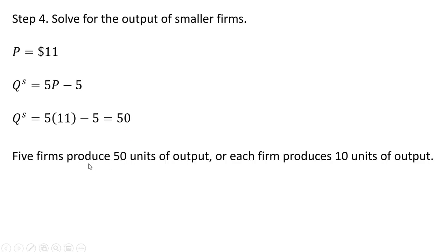So we have five firms producing 50 units of output, or each of the smaller firms producing 10 units of output. Note that the price is $11 in this market. The total output in this market is 104 units. 54 coming from the dominant firm, and 50 coming from the five smaller firms. And we could just plug $11 back into the market demand, and indeed see that the total quantity demanded in the market is 104.